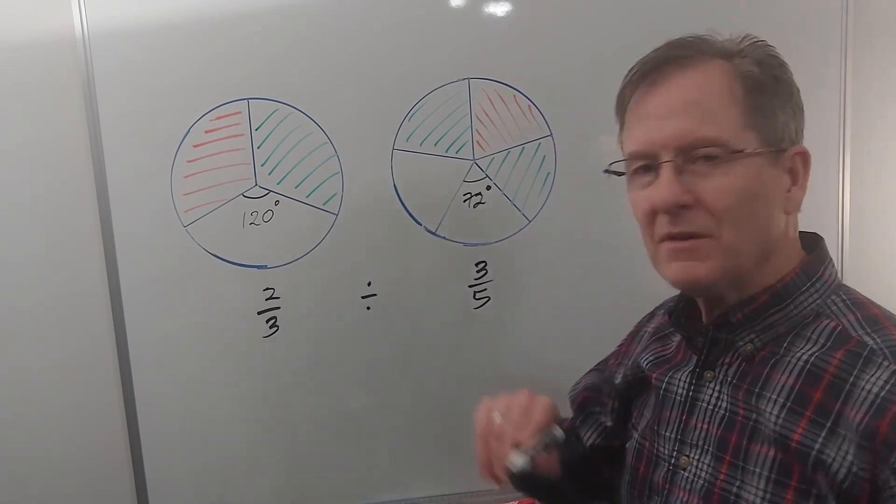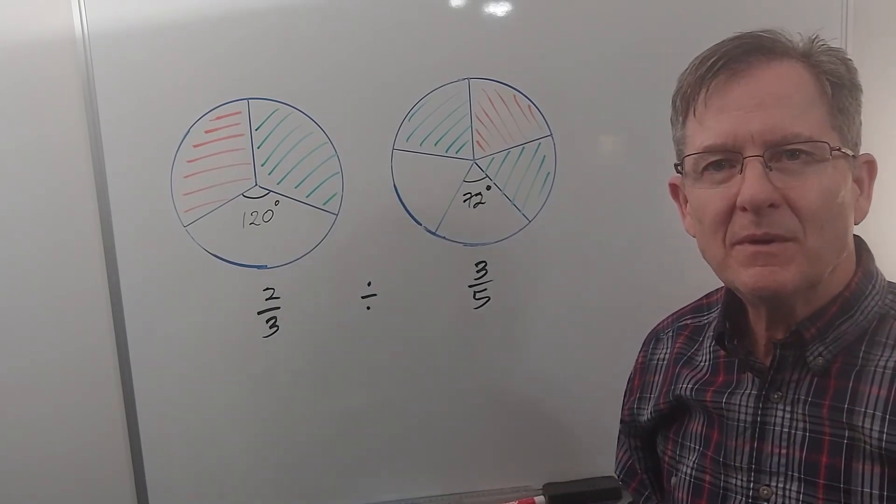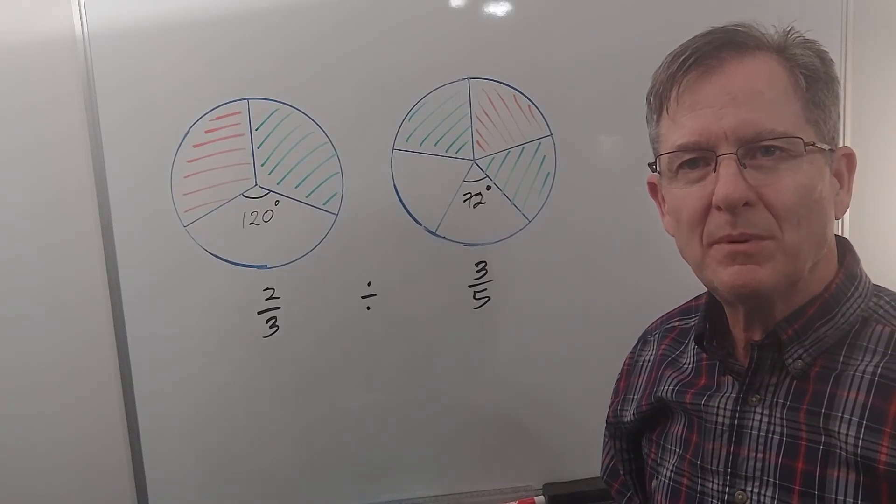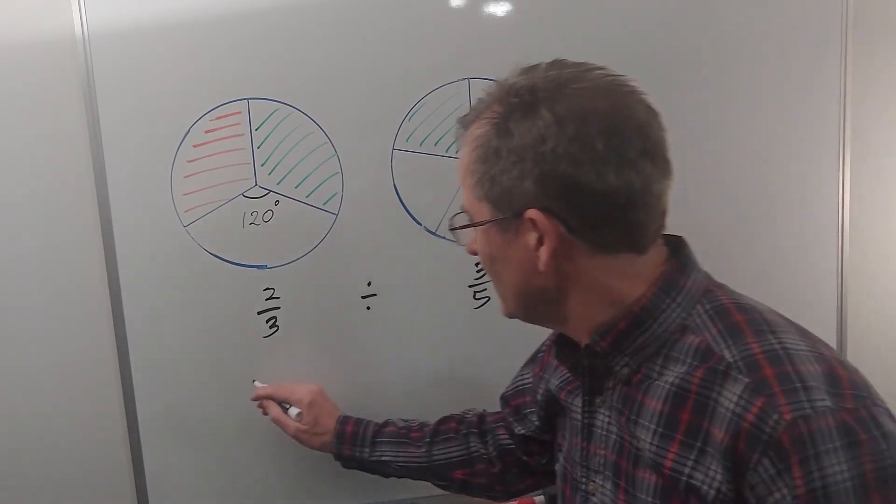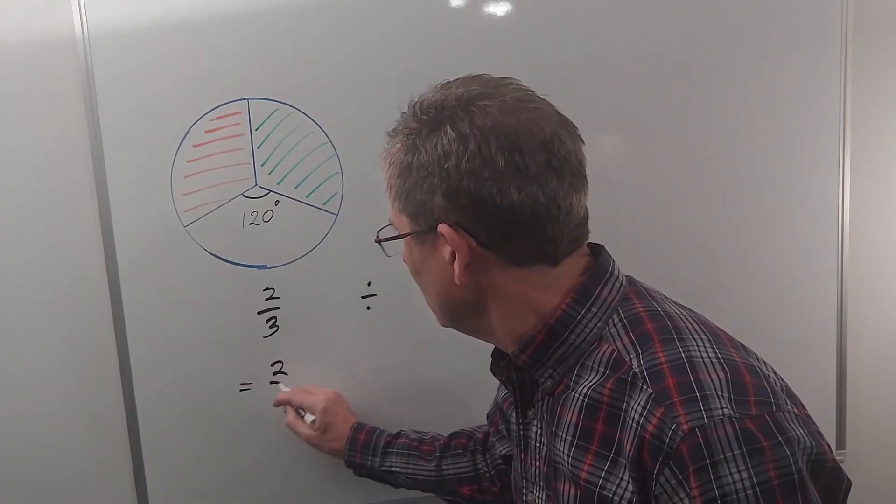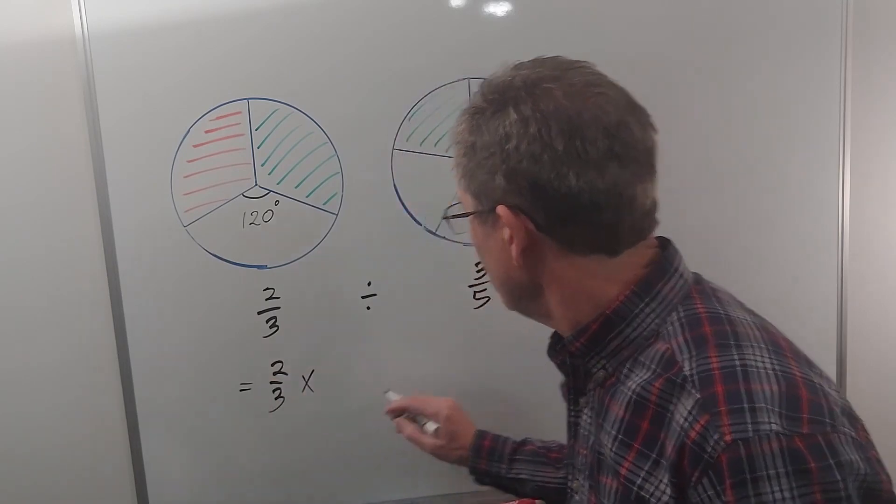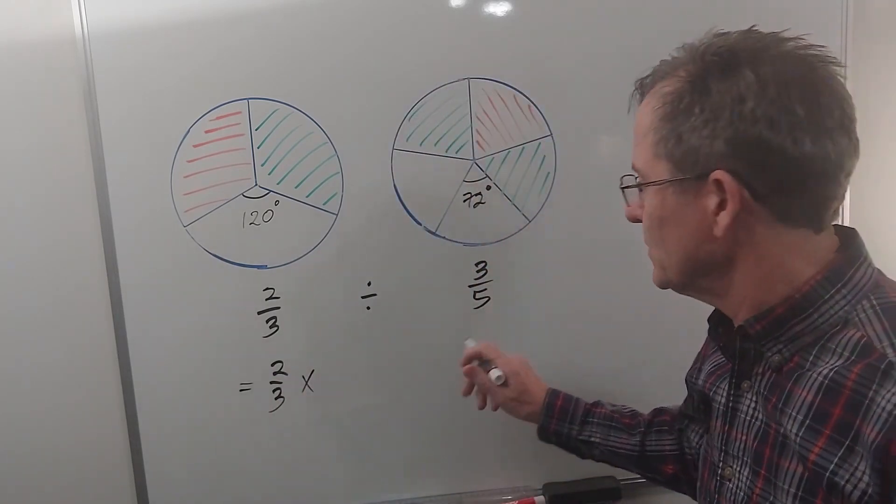So how do we divide fractions? Well we don't really. What we do is we multiply instead. And to get the same answer what we have to do is multiply by the reciprocal of three fifths, which is five thirds.